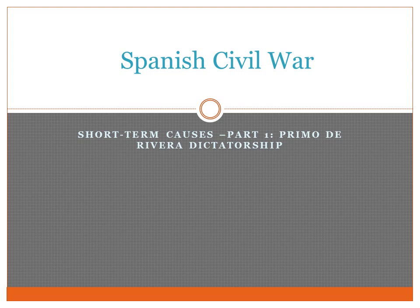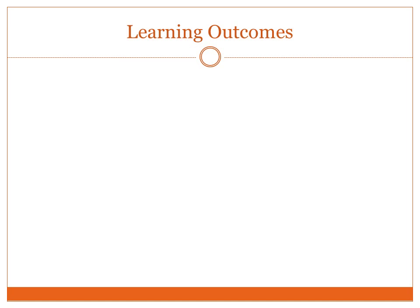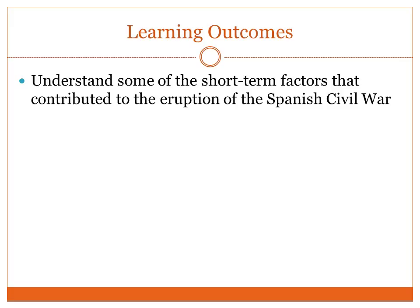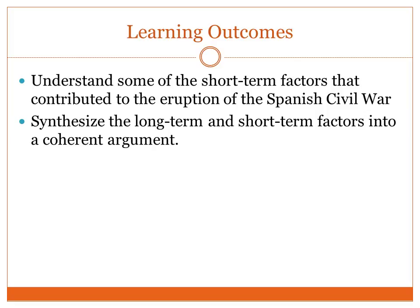Here are our learning outcomes. First, you need to understand some of the short-term factors that contributed to the eruption of the Spanish Civil War — what events increased tensions to the point that they erupted in war. One of the best things to do is consider the short-term factors in conjunction with the long-term factors, as long-term factors contribute to the intensity of the short-term ones. Then you need to synthesize both into a coherent argument, which is what we will be doing at the end.